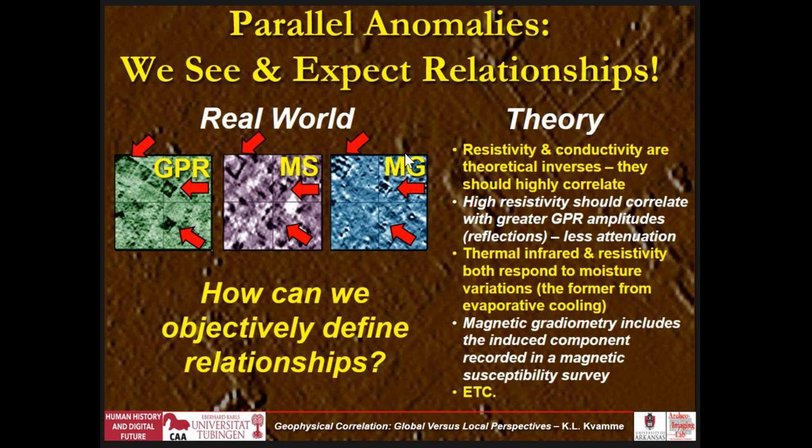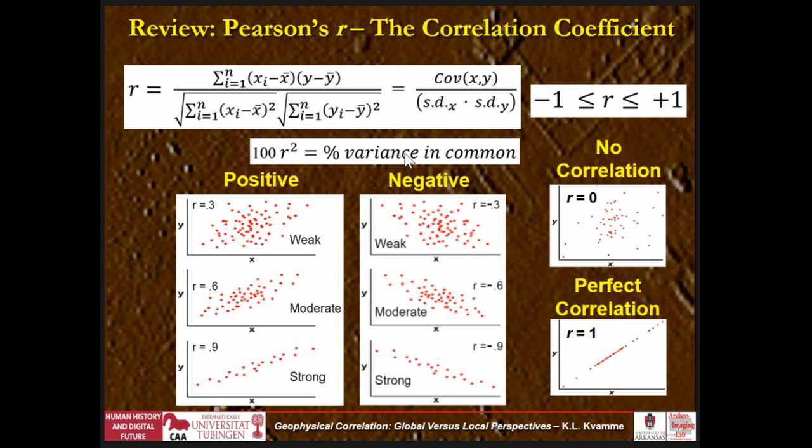How can we objectively define these relationships? Why not use the correlation coefficient? Pearson's R is basically a covariance between two data sets, standardized by the product of the standard deviations.